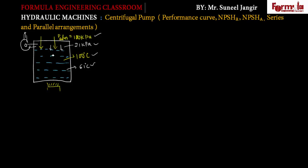We can say that if 100°C is the saturation temperature of water, then for that 100°C the saturation pressure is atmospheric pressure, that is 100 kPa. But for 21 kPa saturation pressure, the saturation temperature will be around 61°C. So as the pressure is decreased, the boiling point is also decreased.